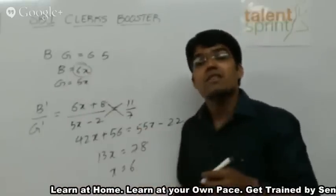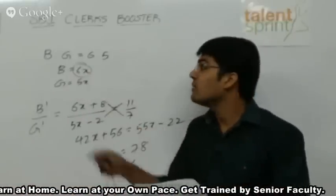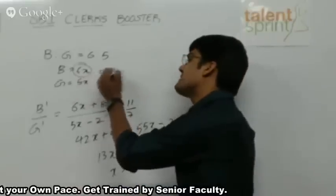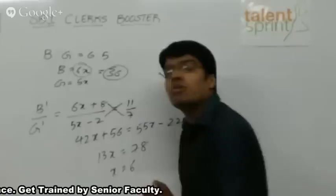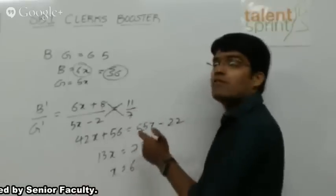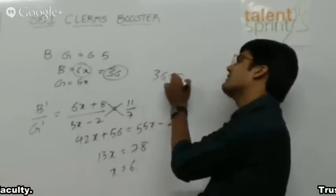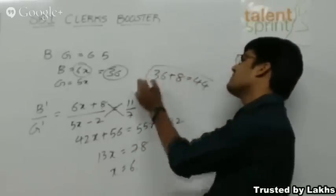But the question says what is the number of boys now? You know that originally there were 36 boys, 6 into 6, 36. But now how many have joined? 8 more have joined. So 36 plus 8, 44 is your answer.